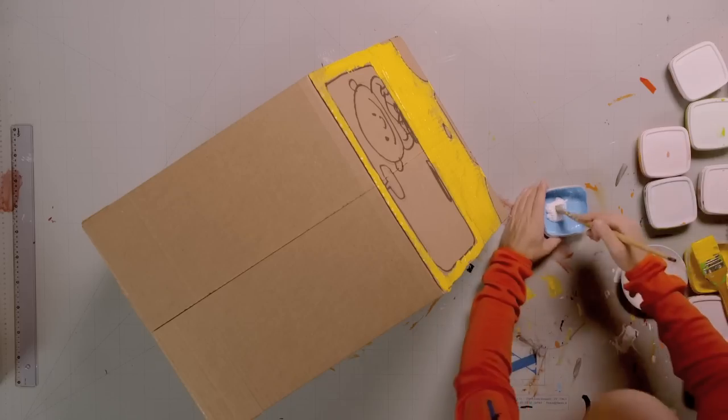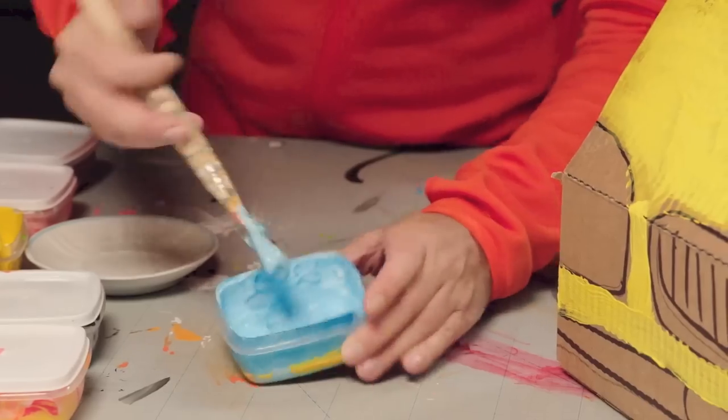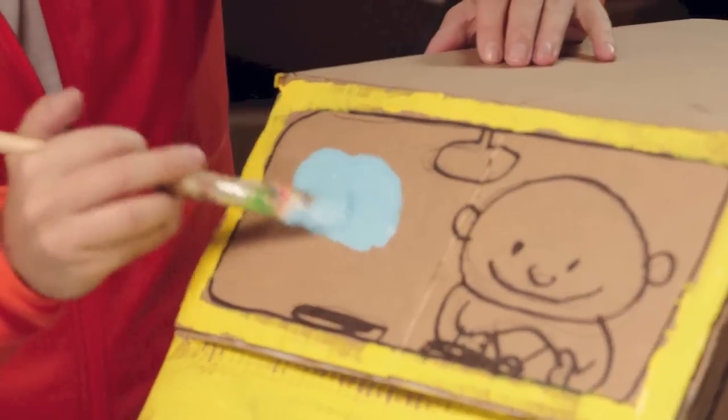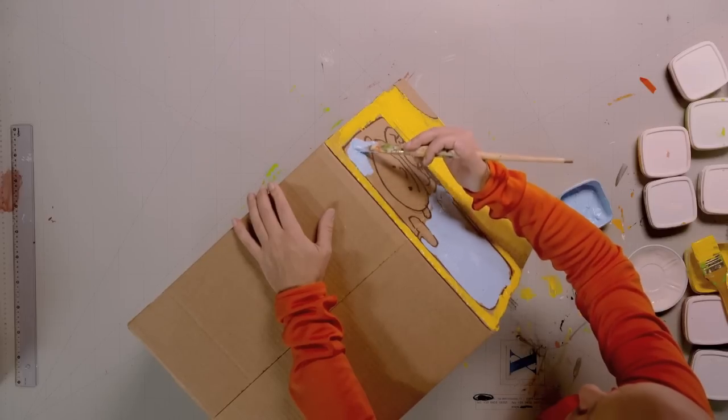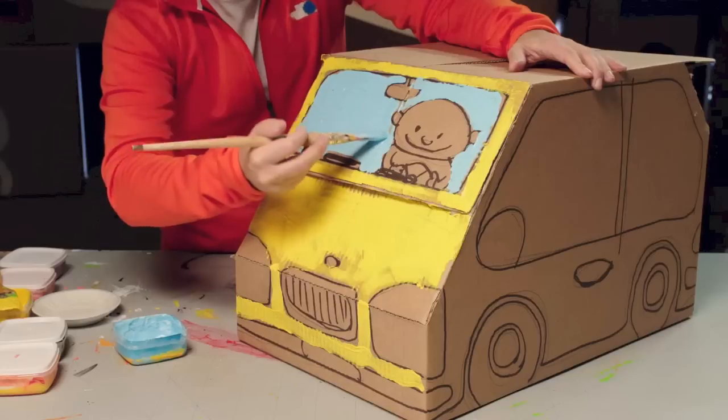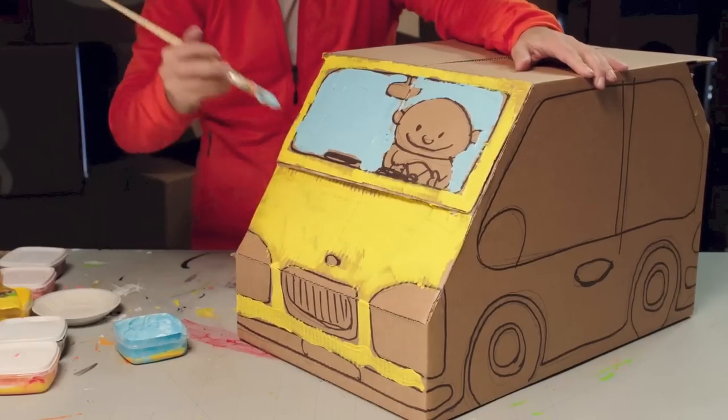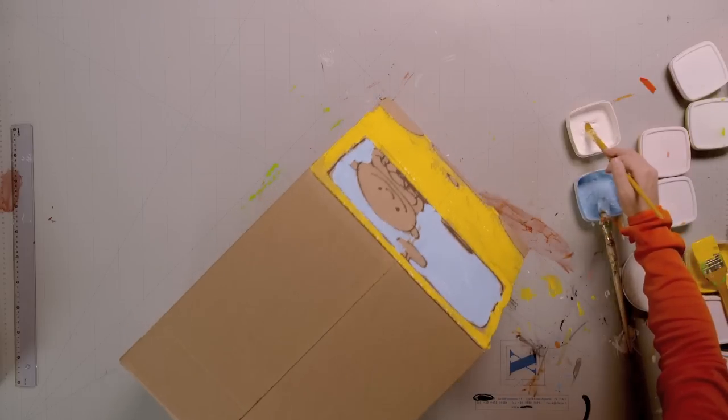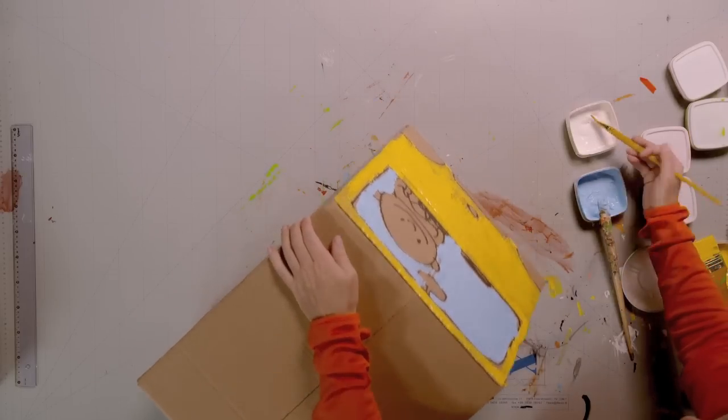I'll mix up a light blue colour now to paint the window around Doodle. Then a bit of white for the headlights and the grill.